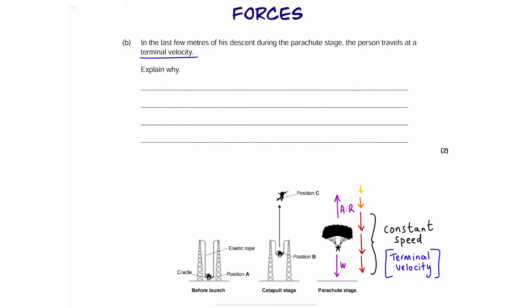So, for the question, we're going to say that the opposite forces, weight and air resistance, are equal and balanced. So, that's one mark. Therefore, there will be no overall force or no resultant force. And that's going to be our second mark.